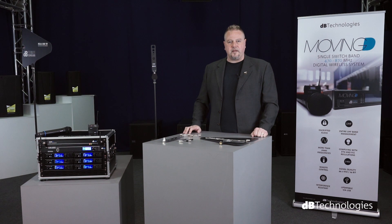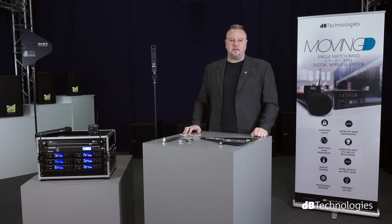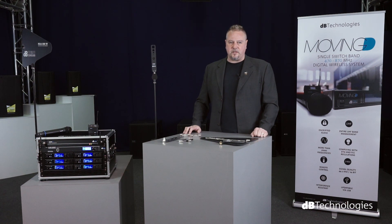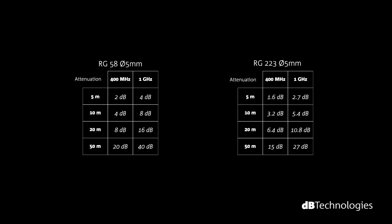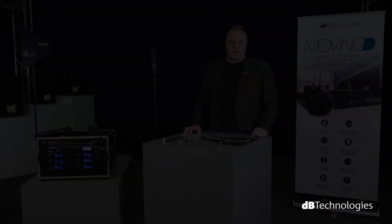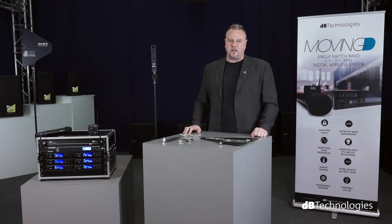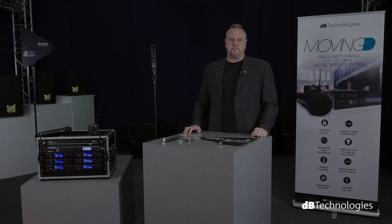Another important element that should be considered is the type of cable. Every cable has different characteristics and loses some signal as it carries it. This loss varies depending on the length of the cable — the longer the cable, the higher the attenuation. In order to offset the loss, adding an amplifier to the antenna, or using an active antenna which already contains an amplifier, can help.